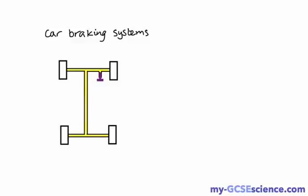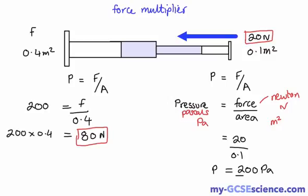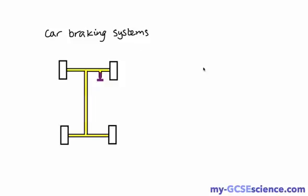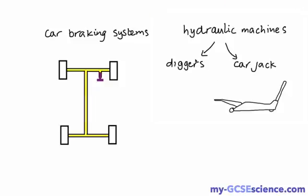Other systems include mechanical diggers, those diggers you see dig up the road as you're maybe going to school, or another example is a car jack. Again, inside this system we have a closed system of a liquid with a small force over here working on a bigger area to multiply the force.